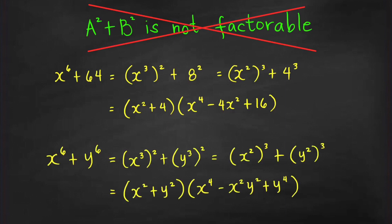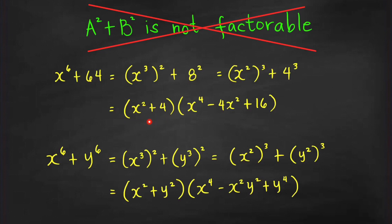To generalize this example, we can have x raised to the 6th plus y raised to the 6th. Although this is a sum of two squares, we can also write it as a sum of two cubes, which is clearly a factorable expression. We can factor it as x squared plus y squared times the trinomial x raised to the 4th minus x squared y squared plus y raised to the 4th. These examples show that sum of two squares may still be factorable. This is already the complete factorization — we cannot write x squared plus 4 as a product of two polynomials of lower degrees, because we are only allowing factors with integer coefficients.